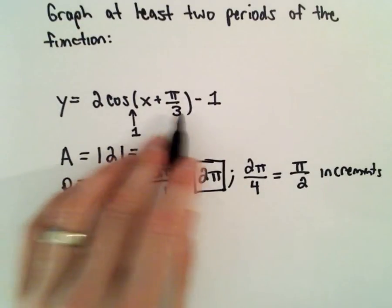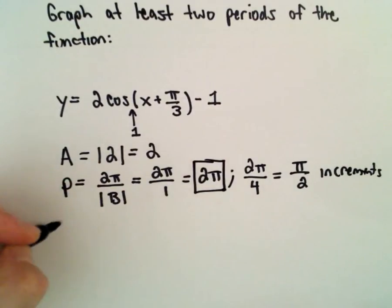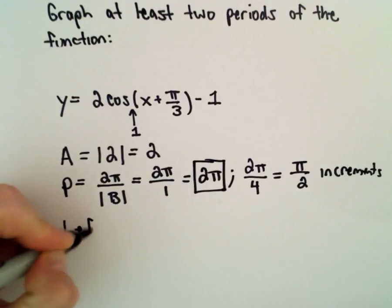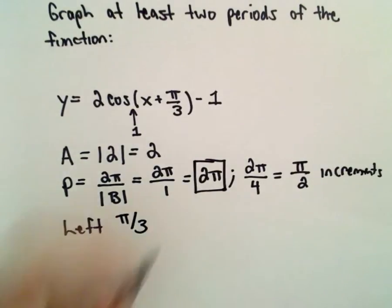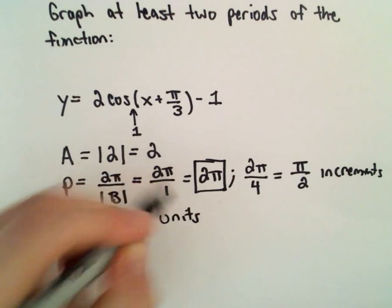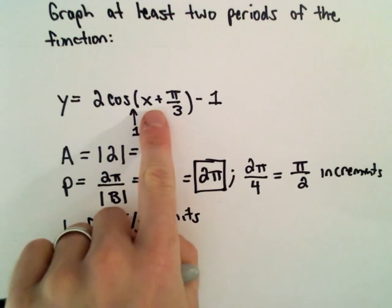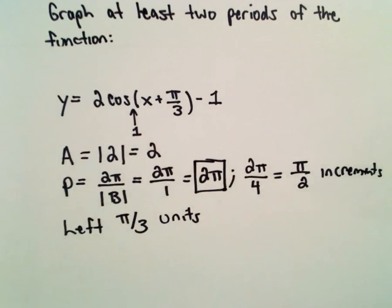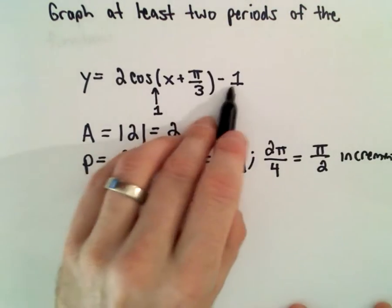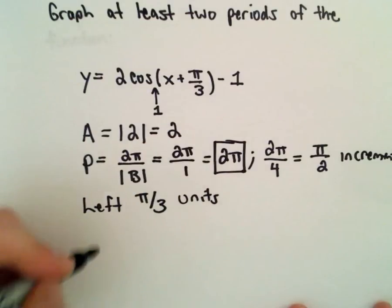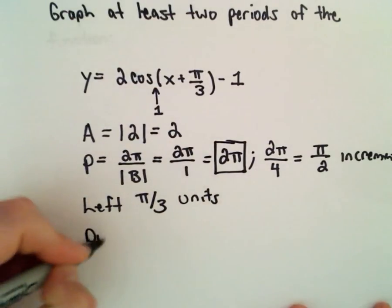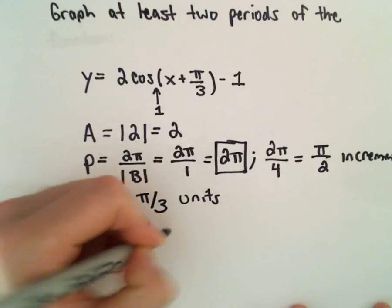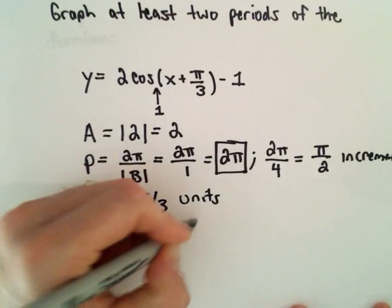In terms of a phase shift or a horizontal shift, it's been shifted to the left pi over 3 units — I see a positive, but it moves it to the left. And then the negative 1 out there takes the graph of cosine and shifts it down 1 unit.